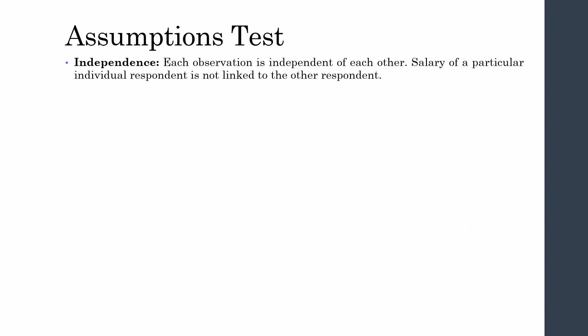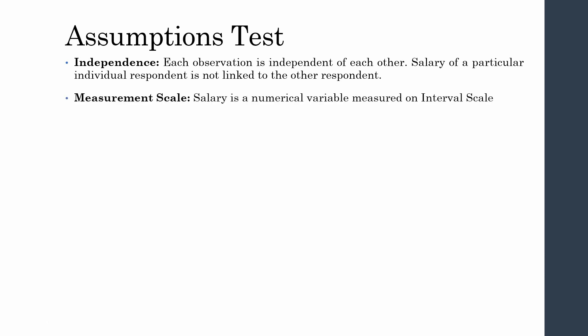Checking the assumptions: independence of observation — each salary observation is independent; the salary of one respondent is not linked to any other. Measurement scale — salary is measured on a numerical interval scale, and the magnitude of distance between two points is equal, so it qualifies as interval scale.